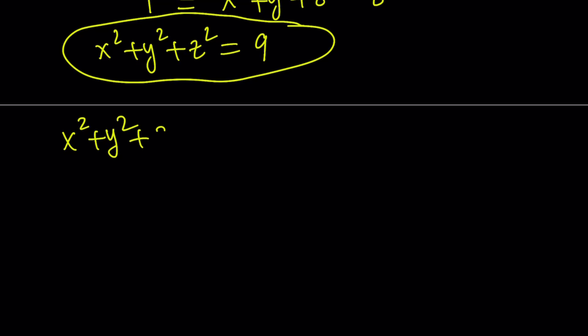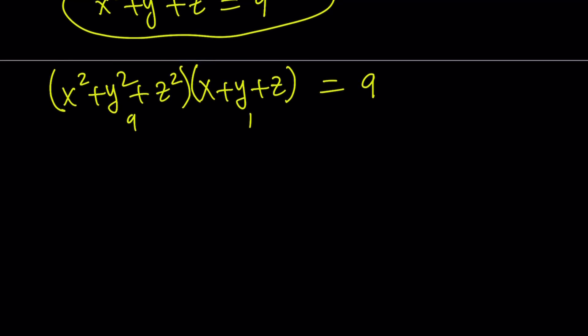So I'm going to multiply this one, the sum of squares, by sum of x, y, z. And since we know that one of them is 9, this is 9 and this is 1, the product will equal 9. Now, let's go ahead and distribute this.